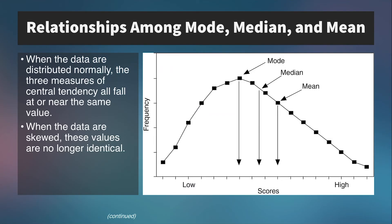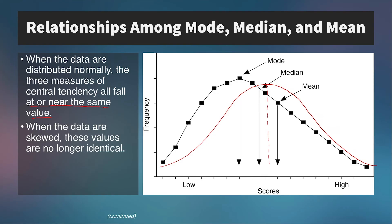There are some relationships among the mode, median, and mean. When data are distributed normally, the three measures all fall at or near the same value — on a bell-shaped frequency distribution, the most frequent score, the middle score, and the average all coincide at the center. But when data are skewed — for example, positively skewed with the tail stretching to the right — the mode is at the peak, the median is slightly to the right of the mode, and the mean is pulled furthest right by the outliers in the elongated tail.